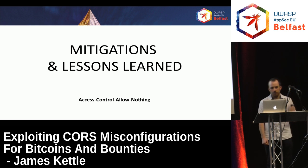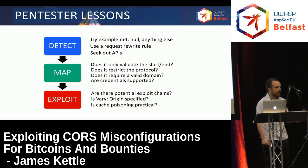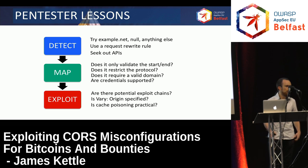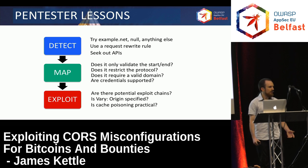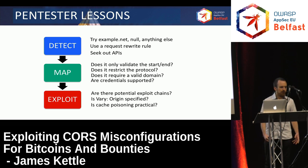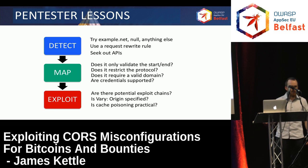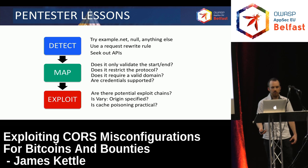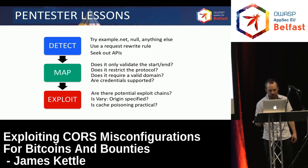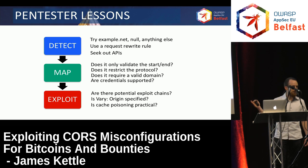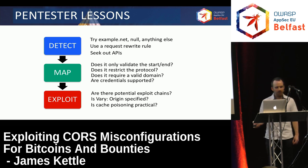So what have we learned? Firstly, most importantly, if you're a pen tester, make sure you look for dynamic generation of CORS headers. Whenever you test a site, you've got to specify an origin header that you think they're likely to trust to try and coax them into revealing this functionality. And then if you do find it, audit it and see if it has any of the vulnerabilities I've mentioned. The Burp Suite scanner will do this for you automatically, as of fairly recently. But it won't build an exploit for you, and that's probably where the most fun is to be had.